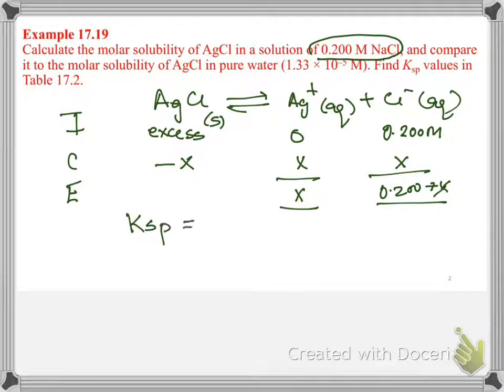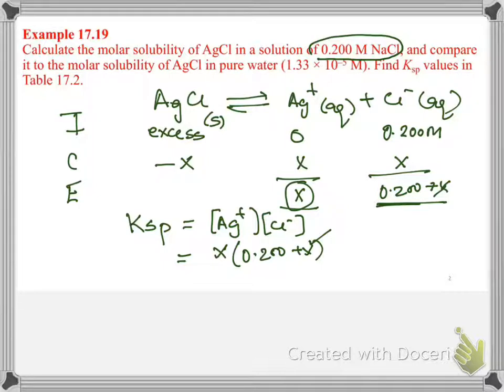KSP will be equal to expression Ag plus times Cl negative. Ag plus is X times 0.200 plus X. And that is KSP. Now, again, what we're going to do here is we're going to assume that this X, the dissociation, is much much smaller than this 0.200. And so that we can ignore this X to avoid the quadratic equation. So that means it will be 0.200 X.